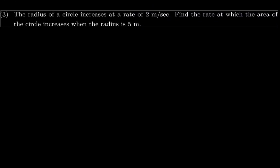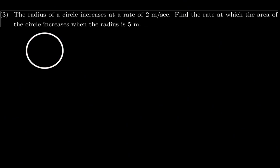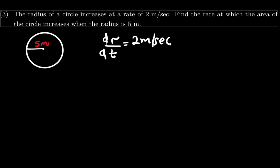Question number 3: the radius of a circle increases at a rate of 2 meters per second. Find the rate at which the area of the circle increases when the radius is 5 meters. We have a circle with a radius of 5 meters. The rate of the radius is given as 2 meters per second, and they want the rate at which the area of the circle increases. The area of the circle equals pi r squared.